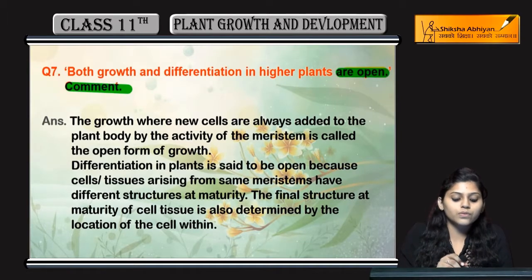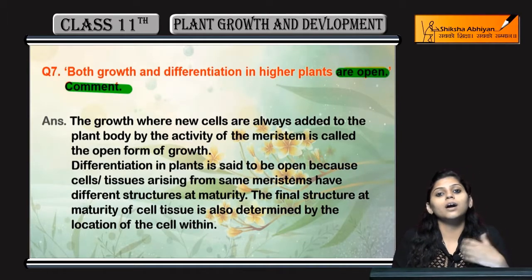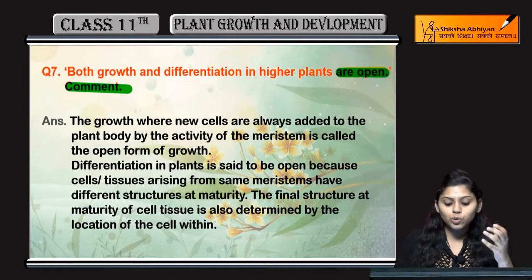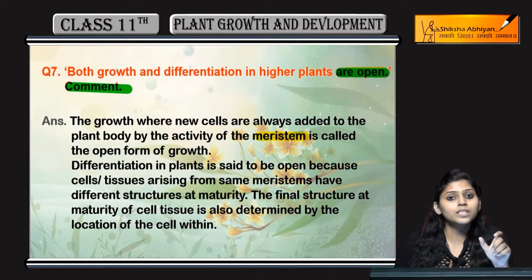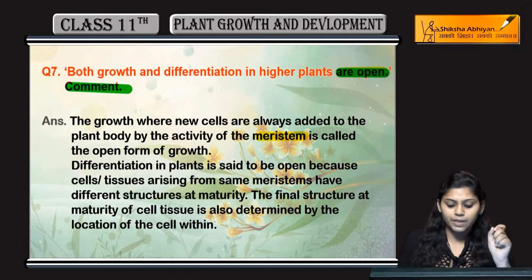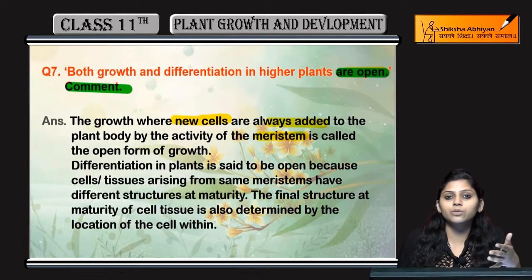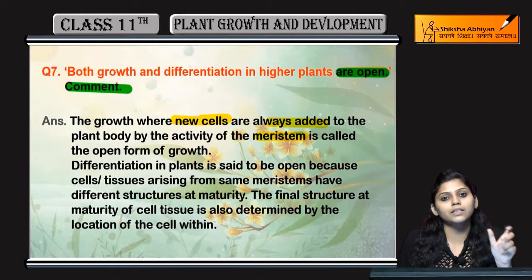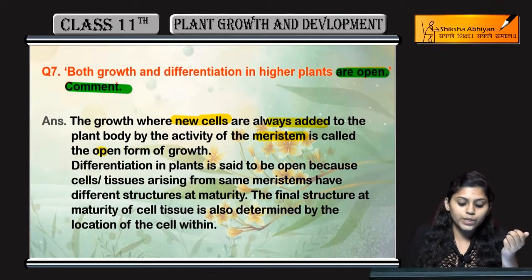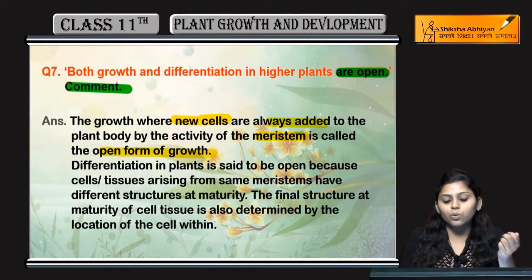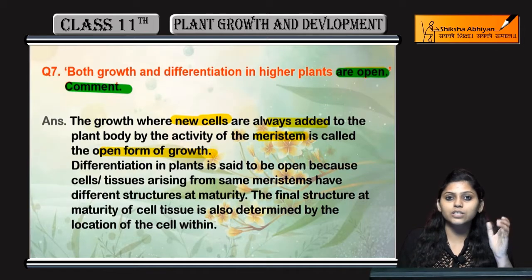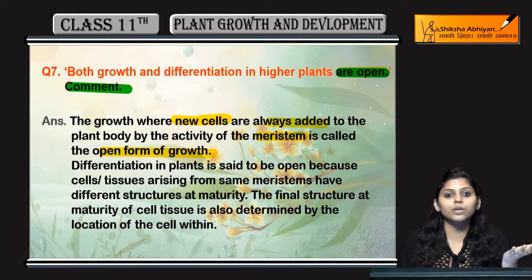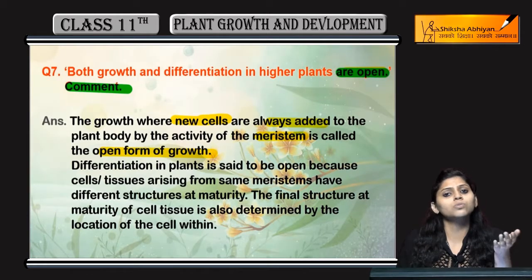So first of all, growth. Growth ka haan hooti hai jo meristematic region hota hai kisi bhi plant body ka. Us meristematic region mein cells hamesha add hote hain — by active cell division. So isse bolte hain open form of growth, jahan pe meristematic region se cells divide hote hain aur grow hote hain.